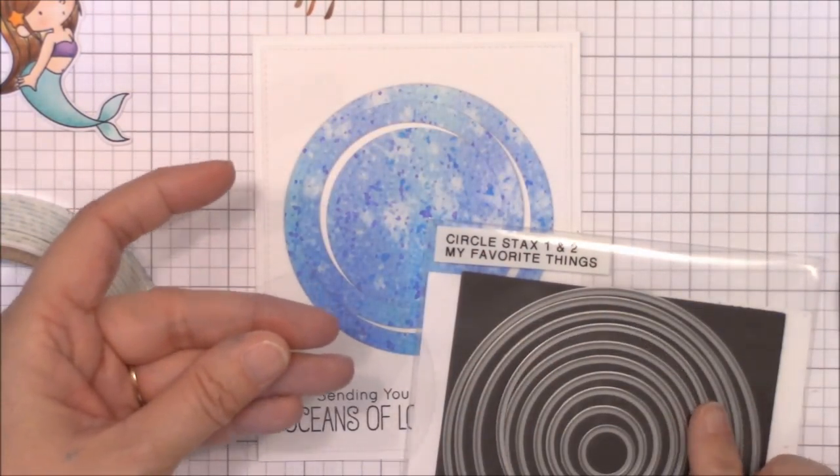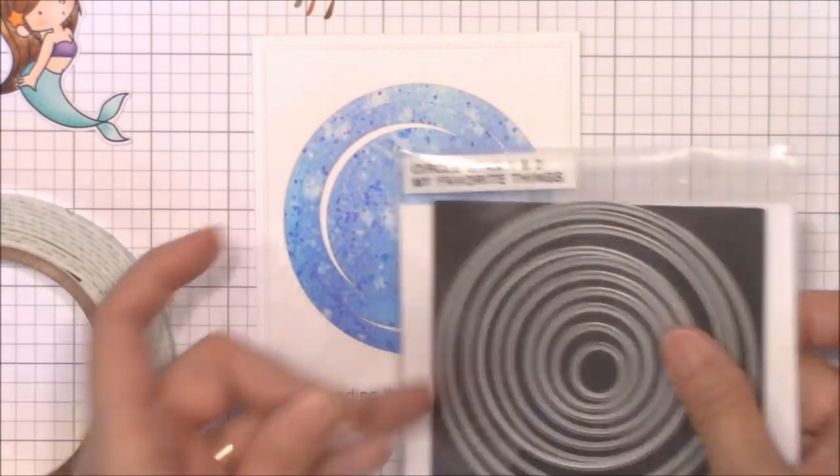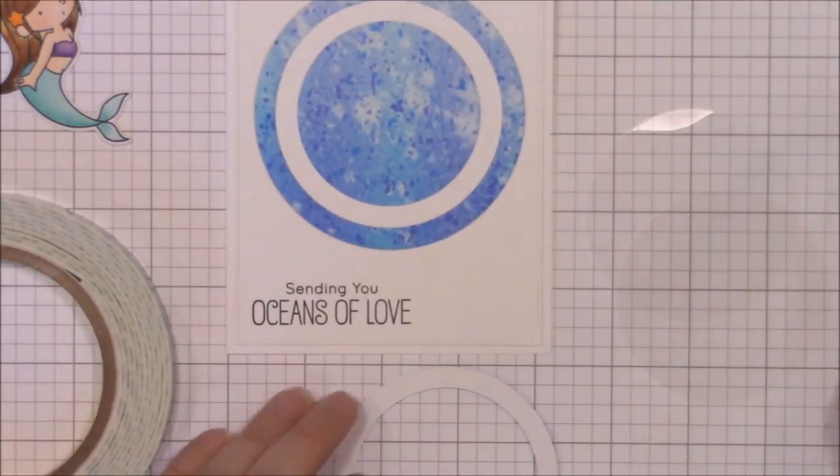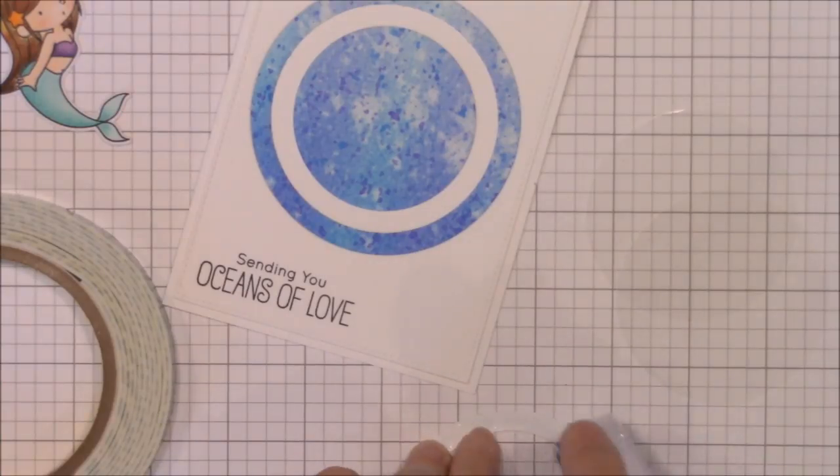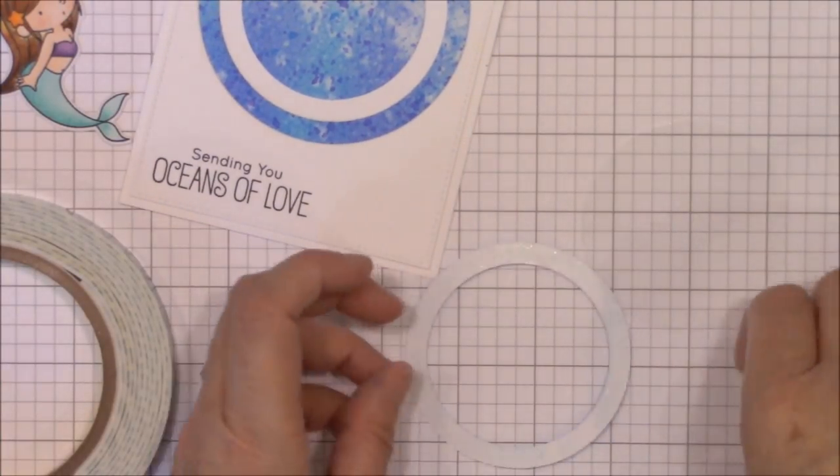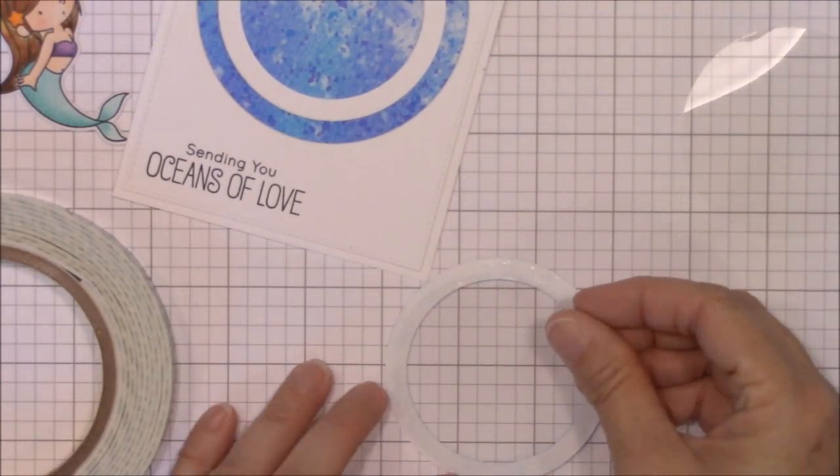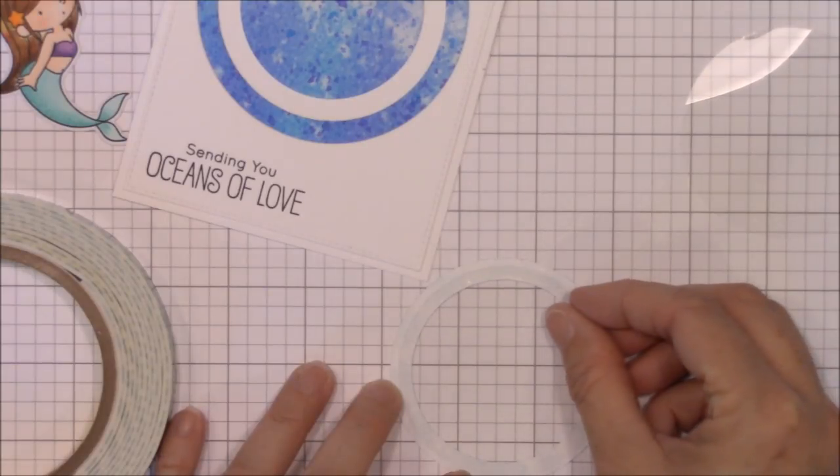I used another circle stacks die, one that's just a bit smaller than the outside edge of the second circle to die cut two acetate circles. I'll use these to enclose my shaker pocket. I'm adhering one acetate circle to the back of the second circle frame with some tape runner.